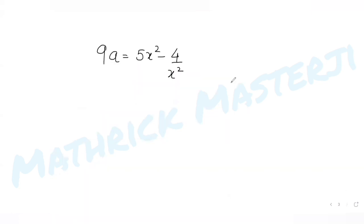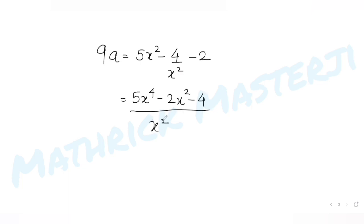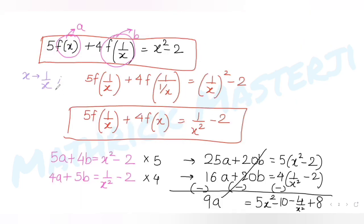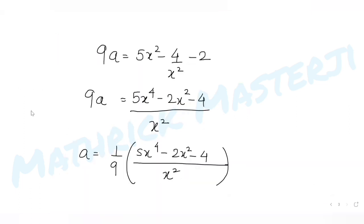Simplifying, 9a = 5x² − 4/x² − 2, which gives 9a = (5x⁴ − 2x² − 4)/x. Therefore a = (1/9)·(5x⁴ − 2x² − 4)/x. Re-substituting a = f(x), we have f(x) = (1/9)·(5x⁴ − 2x² − 4)/x.